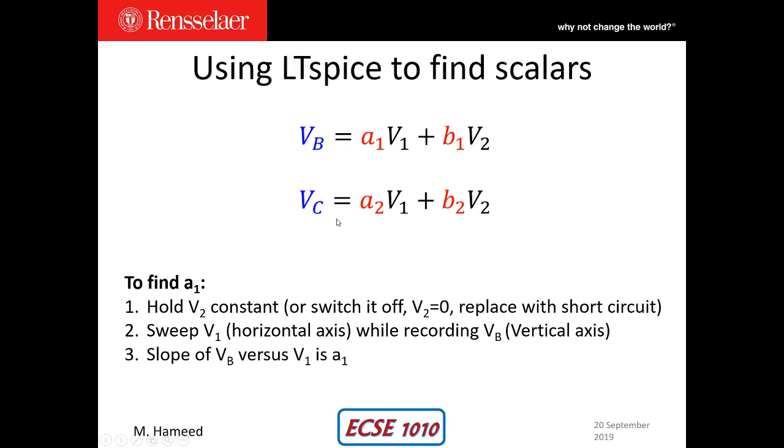So the relationships are carried over and let's see if we can find A1. Well, A1 is the coefficient of V1, and I can find A1 if I were to make V2 a constant or zero. That term would cancel out and I would have VB equals a constant times V1. And if I were to sketch it, then the slope of the line would give me A1.